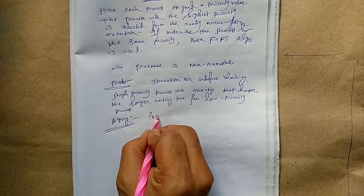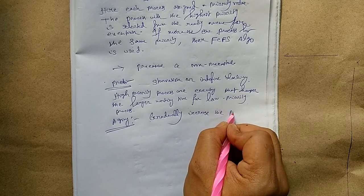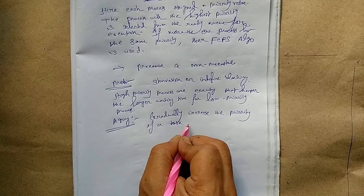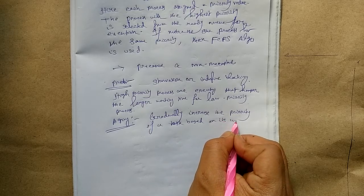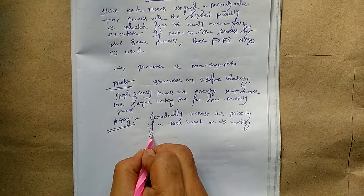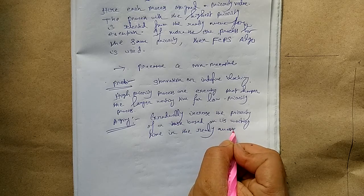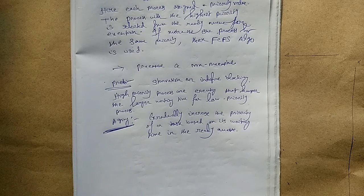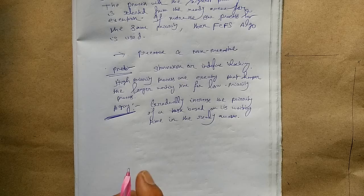What is starvation? Starvation means high-priority processes are executing, causing large waiting times for low-priority processes. The solution is aging. Aging means gradually increasing the priority of a task based on its waiting time in the ready queue. Using this aging technique, a low-priority process will become a high-priority process after a certain time. We will now illustrate the priority scheduling algorithm with an example.